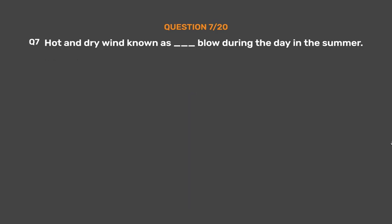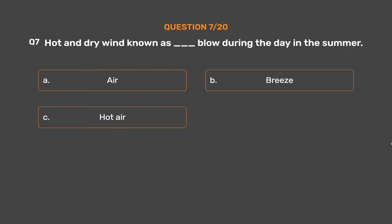Question No. 7: The hot and dry wind known as ___ blows during the day in the summer. Option A: Air, Option B: Breeze, Option C: Hot air, Option D: Loo.